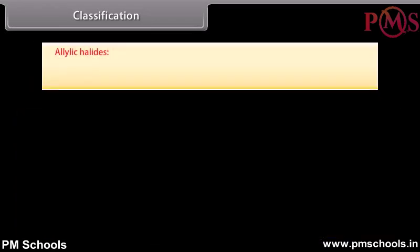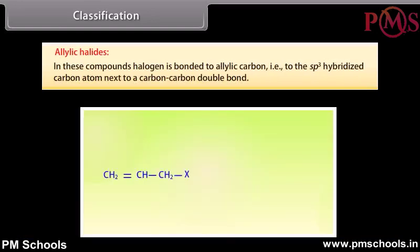Allylic halides: in these compounds, halogen is bonded to allylic carbon, that is, to the sp3 hybridized carbon atom next to a carbon-carbon double bond.